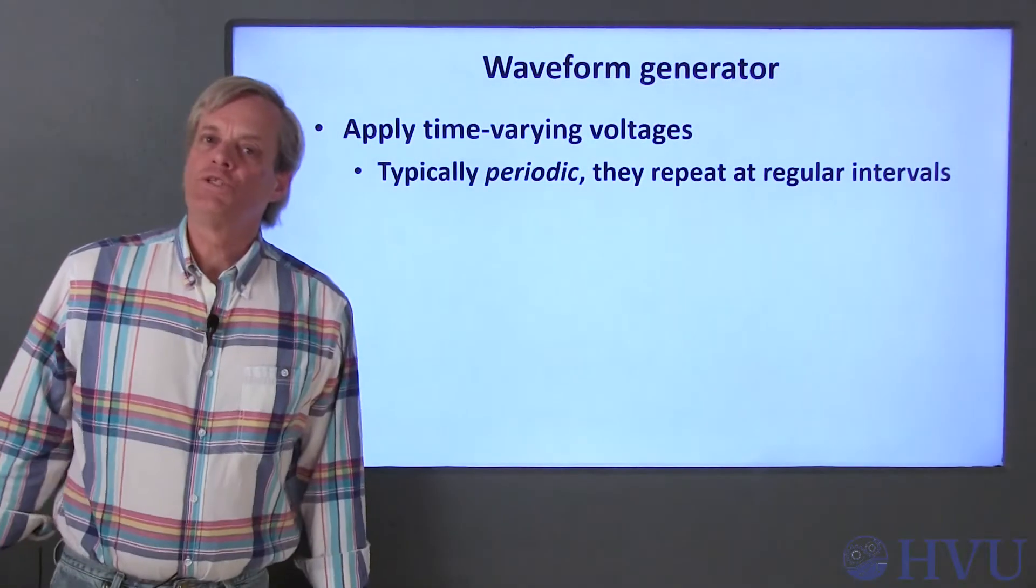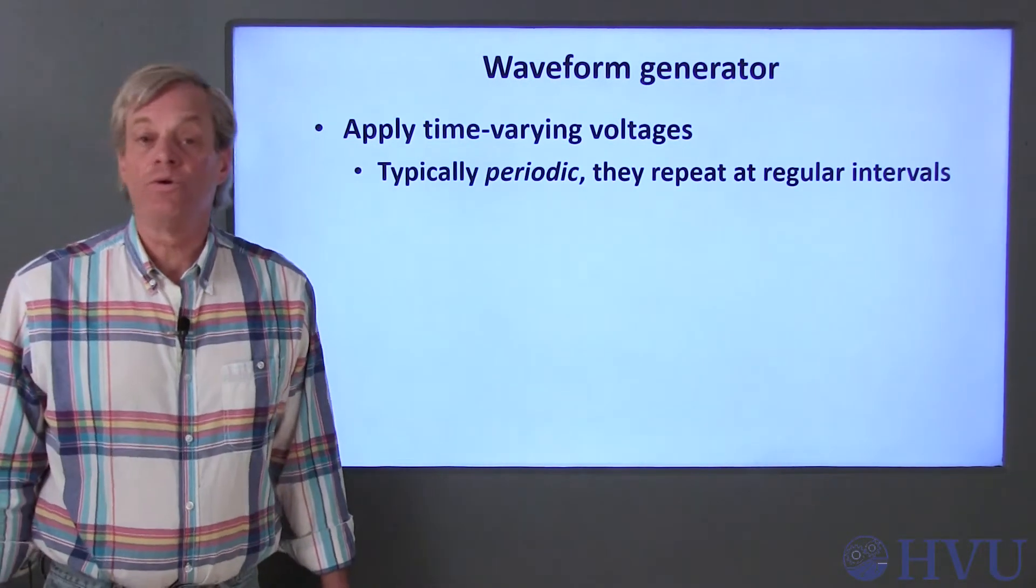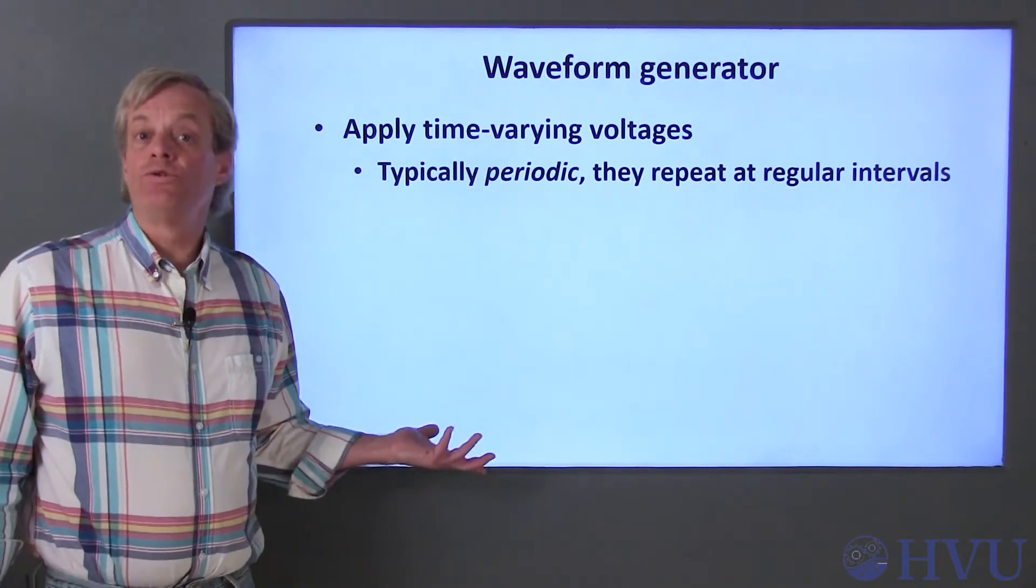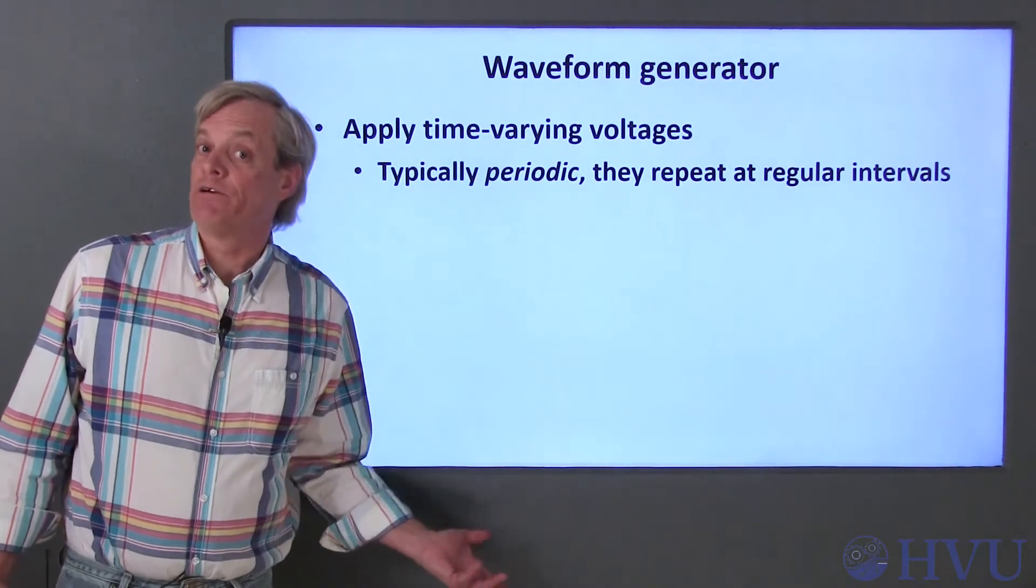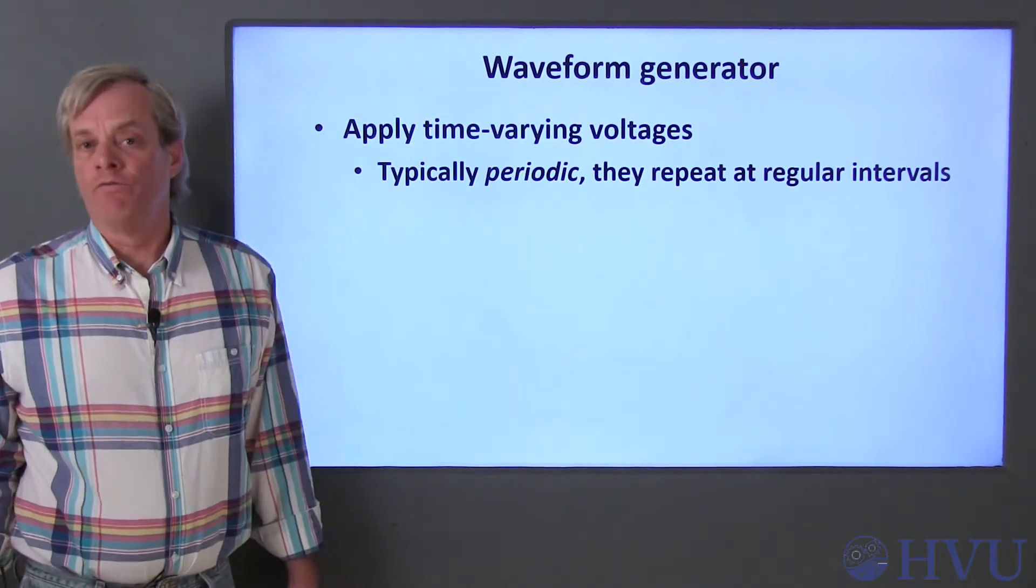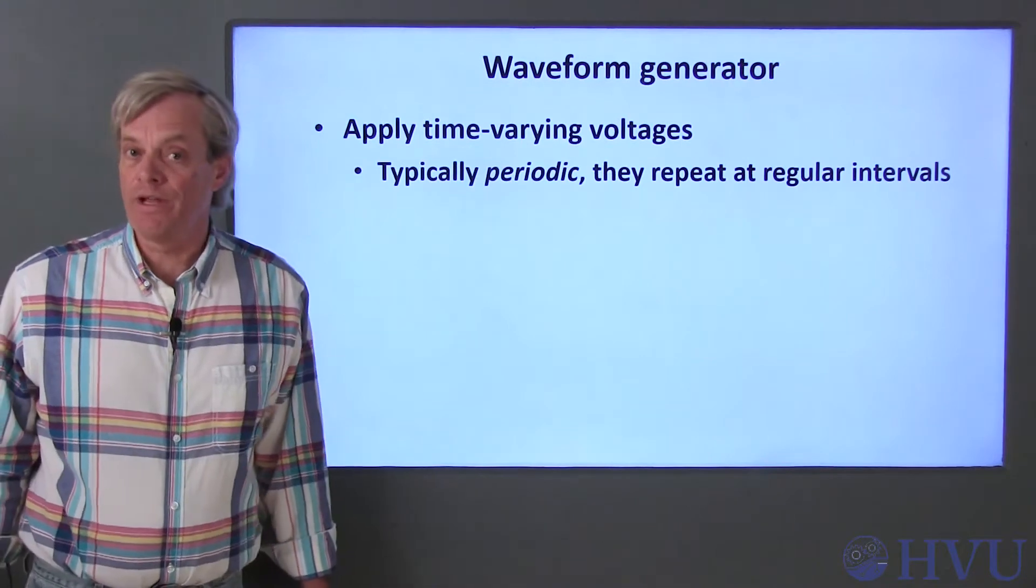This instrument is typically used to provide time-varying voltages to a circuit. Voltages and currents in a circuit are categorized as being either constant or time-varying. The arbitrary waveform generator can be used to apply a wide range of time-varying or constant voltages to our circuits. For the most part, the voltages provided will be periodic, meaning that they repeat themselves at regular intervals.